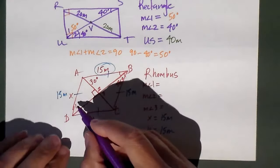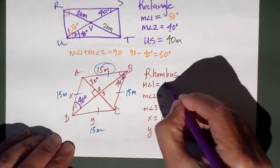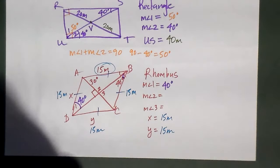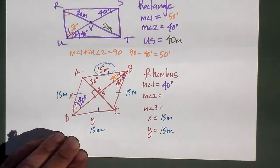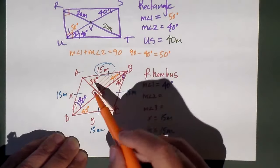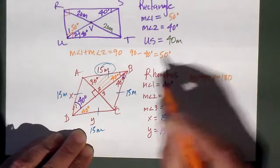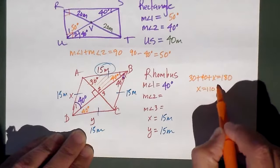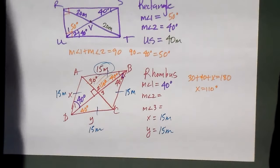Now for angle two and angle three. In a rhombus the diagonals cut the angles in half, so if that corner angle portion is 40, then the adjacent bisected portion is also 40. I have a triangle here — a triangle adds up to 180 degrees. So 30 plus 40 plus angle two equals 180, giving angle two equals 110 degrees. But wait — angle two and angle three should each be 90 degrees because the diagonals are perpendicular in a rhombus. So I should have made the given angle 50 degrees instead of 30, because 40 plus 50 equals 90.